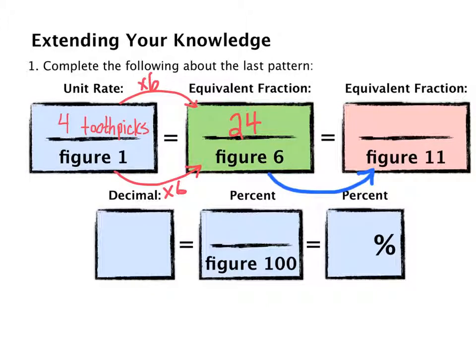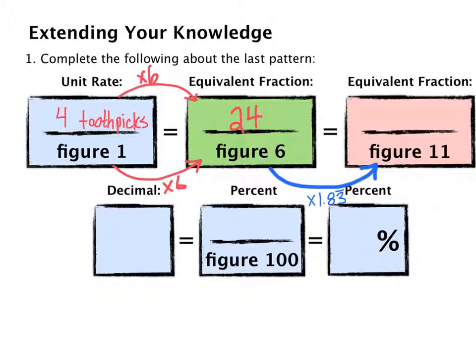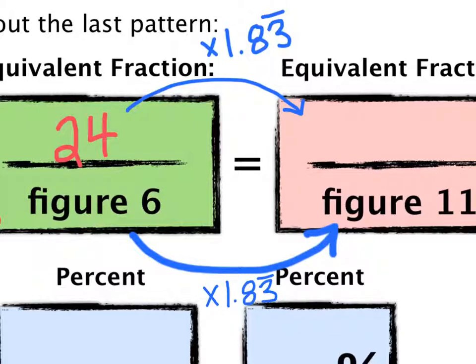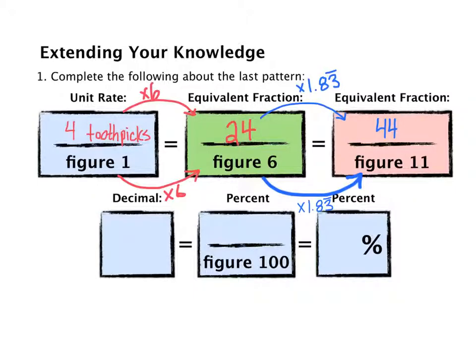Since 11 divided by 6 is 1.83 repeated, we'll do the same to our 24 toothpicks and multiply them by 1.83 repeated and we get 44 toothpicks. Note that we can do the same thing by using our original unit rate, multiplying figure 1 by 11 and 4 toothpicks by 11, and we get 44 toothpicks for figure 11.